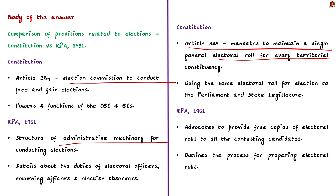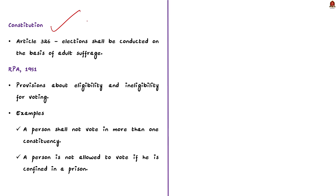The RPA 1951 mandates providing free copies of electoral rolls to all contesting candidates and outlines the process for preparing electoral rolls. Third, the Constitution under Article 326 says elections should be conducted on the basis of adult suffrage — every citizen of India who is not less than 18 years of age can vote. On the other hand, the RPA 1951 mentions the eligibility and ineligibility for voting, stating that a person shall not vote in more than one constituency and that a person confined in prison is not allowed to vote.